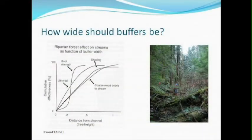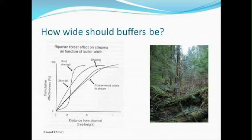Again, it gets back to the question of how wide should buffers be. Another diagram from FEMAT brings into conceptualization coarse wood inputs to stream, as well as things like snags along streams and what they contribute in terms of wood strength or root strength. The question is how far or how effective in terms of distance from channel is that as a source of coarse wood for stream input.